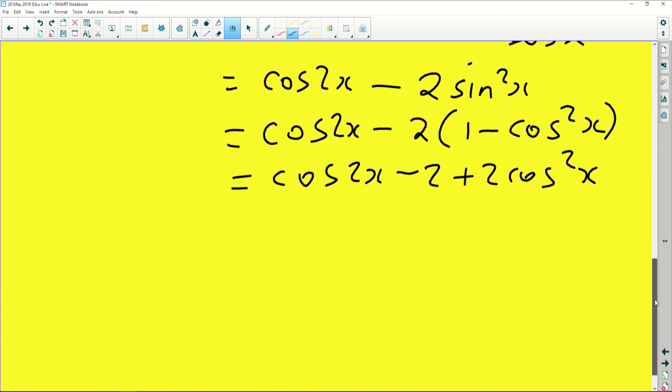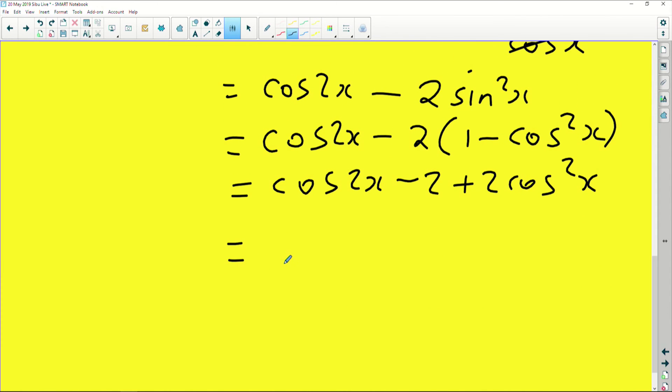If you multiply, you are sitting with minus 2 minus times minus is positive, 2 cos squared x. Quite nice and very awesome indeed.